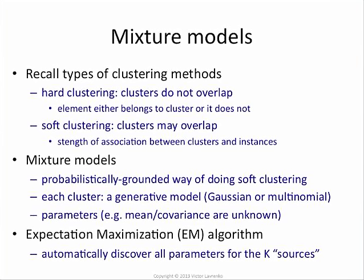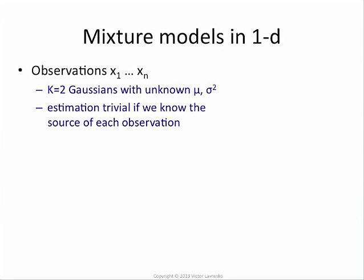The EM algorithm is what allows you to infer those parameter values. Let's look at the problem with a small example. Suppose I have a bunch of data points and I know that they come from two sources — two models. These points come from the yellow source and these come from the blue source. If I know there are two sources and I assume they are Gaussian, it's a one-dimensional task. All I need to do is estimate the mean and variance, and we know how to do that because we know which points came from which Gaussian.